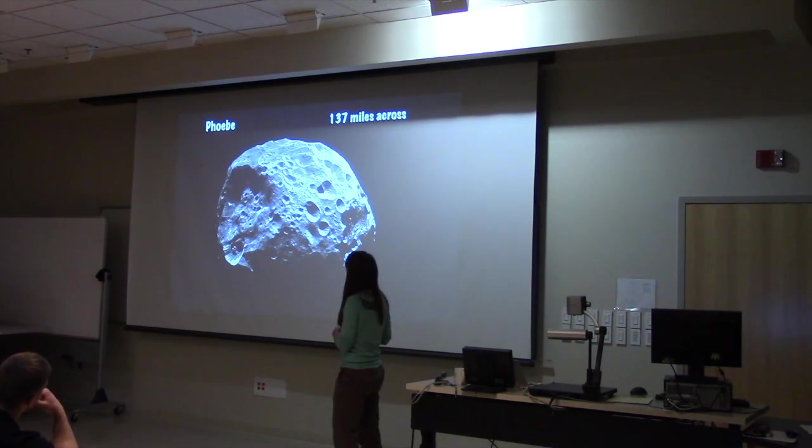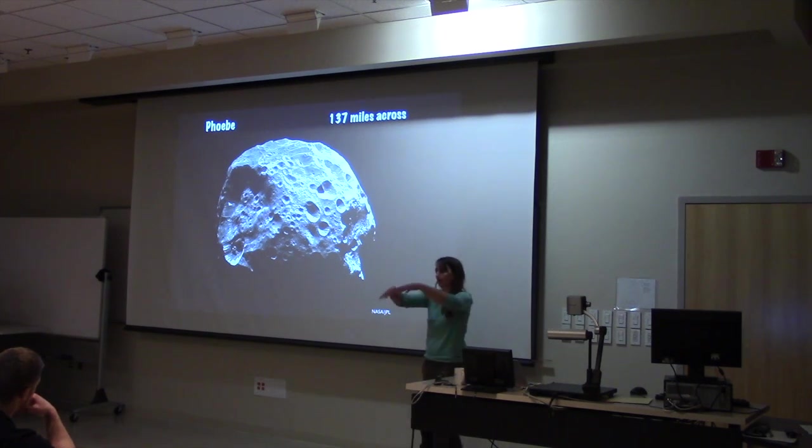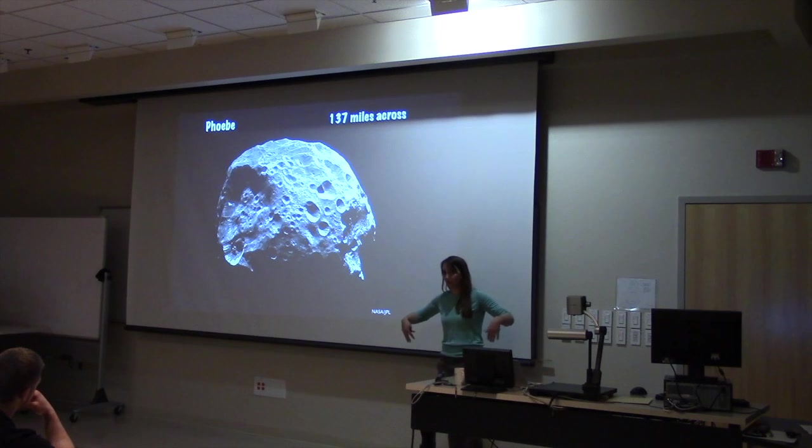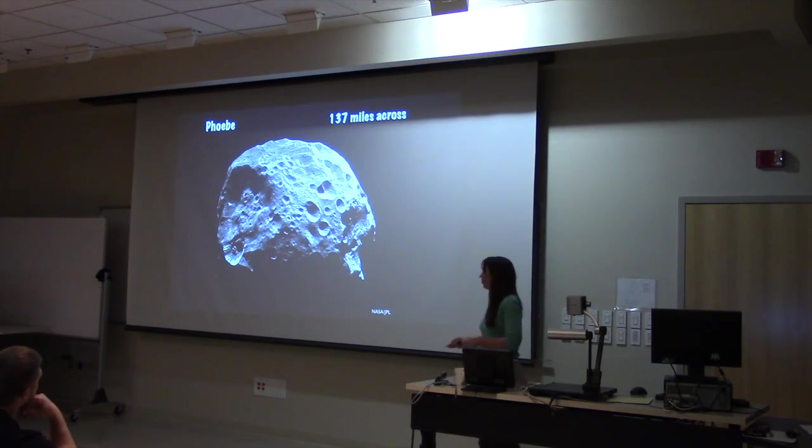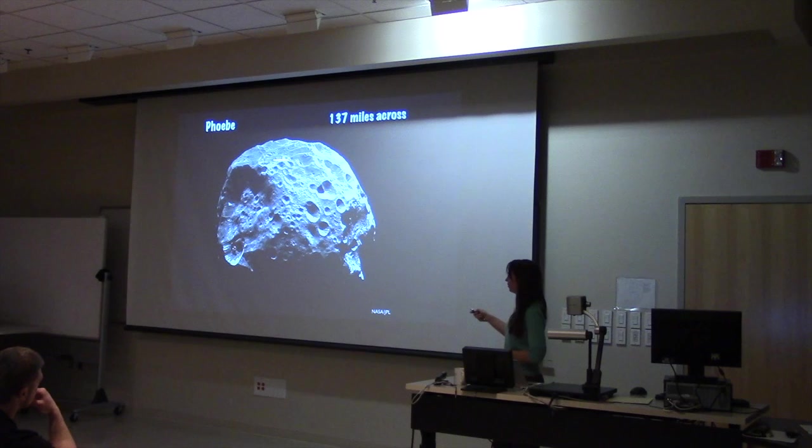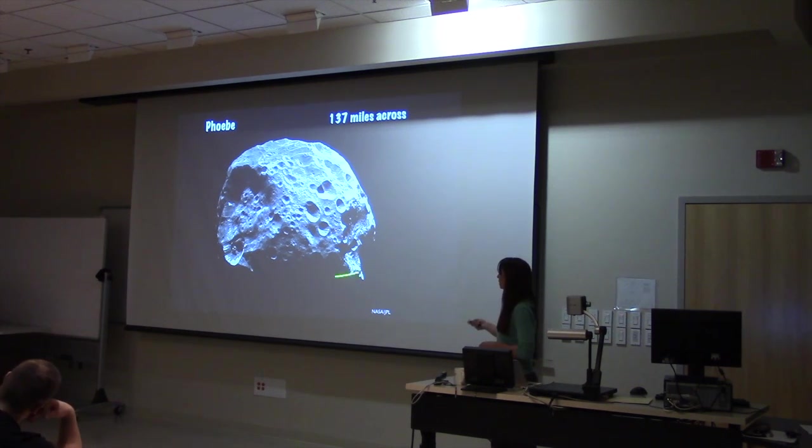That, along with its composition and its shape, led scientists to believe that this moon is actually a Kuiper Belt object. So the Kuiper Belt is this region outside of the orbit of Neptune with a whole lot of leftover space material from the formation of the solar system.